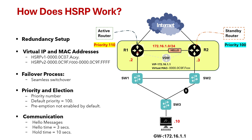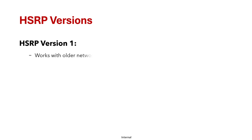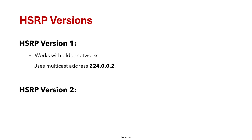If the standby router doesn't receive any hello for 10 seconds, it will consider the active router dead and take over the active role. HSRP comes in two flavors: version 1, which works with older networks and uses multicast address 224.0.0.2, and version 2, which offers enhancements like better IPv6 support and uses multicast address 224.0.0.10.